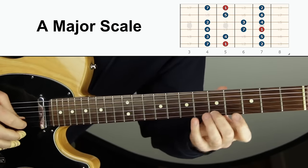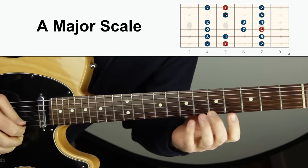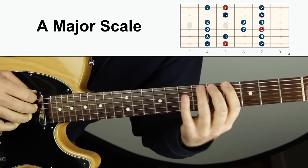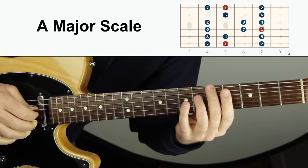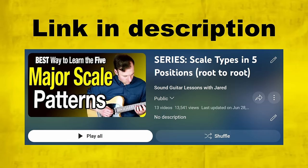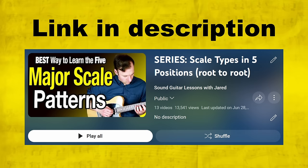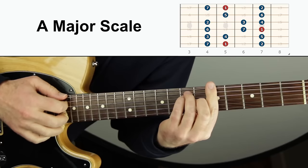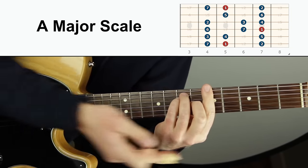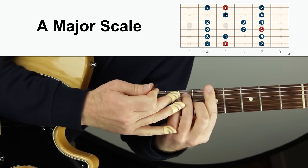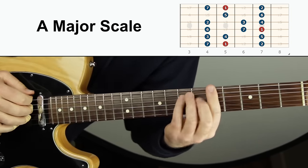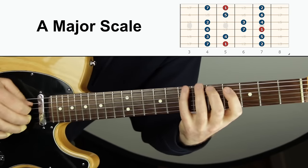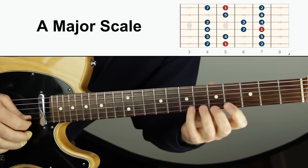Let's review the regular A major scale first. If you need help with mapping out scales, I have videos on all scale types on how to map them out all over the fretboard. This is one of the scale forms for major. In the CAGE system, this can be called the E form because it is outlining kind of an E major shape — like an open E shape but up the fretboard. Play that up and down and make sure you can do that.